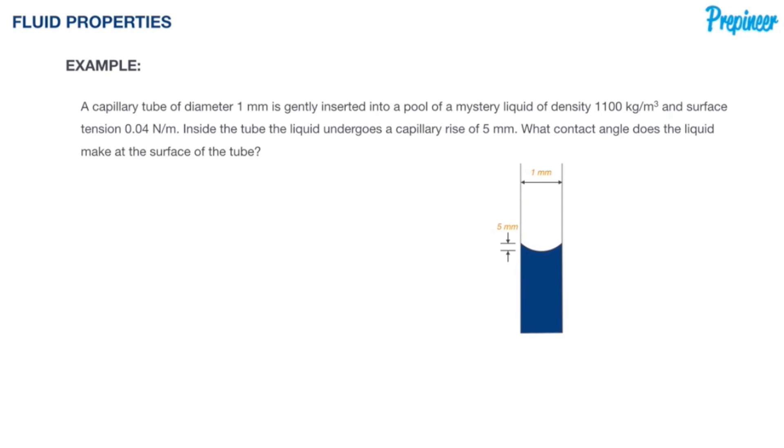A capillary tube of diameter 1 millimeter is gently inserted into a pool of a mystery liquid of density 1100 kilograms per cubic meter and a surface tension of 0.04 newtons per meter. Inside the tube, the liquid undergoes a capillary rise of 5 millimeters. What contact angle does the liquid make at the surface of the tube?